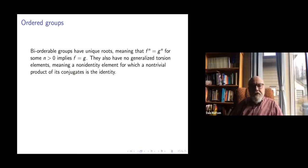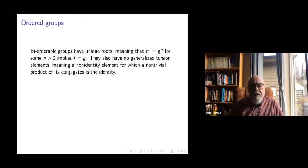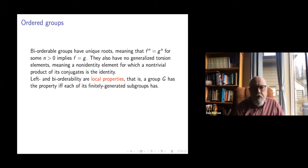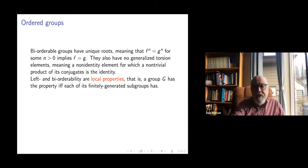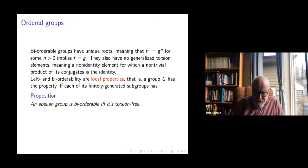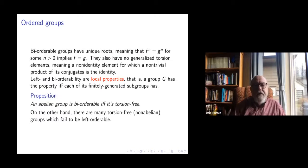In a bi-orderable group you have the special property that roots are unique: if two elements have nth powers equal, they have to be equal — a generalization of being torsion-free. They also have no generalized torsion elements; a generalized torsion element is a non-identity element for which a non-trivial product of its conjugates gives you the identity. These are also local properties, meaning a group G is left or bi-orderable if and only if each of its finitely generated subgroups is. For abelian groups, being bi-orderable is equivalent to being torsion-free, but for non-abelian groups it's a very different story — there are many torsion-free non-abelian groups which are not left orderable.